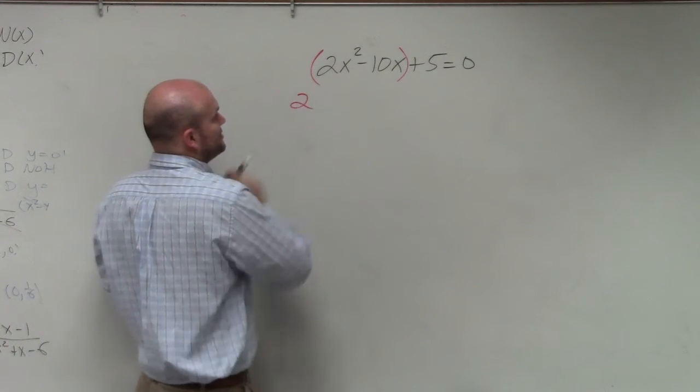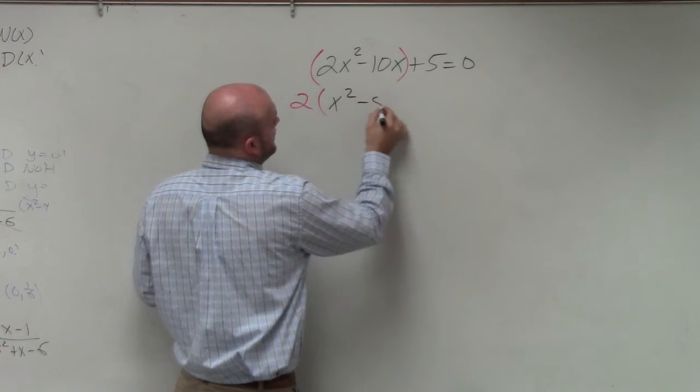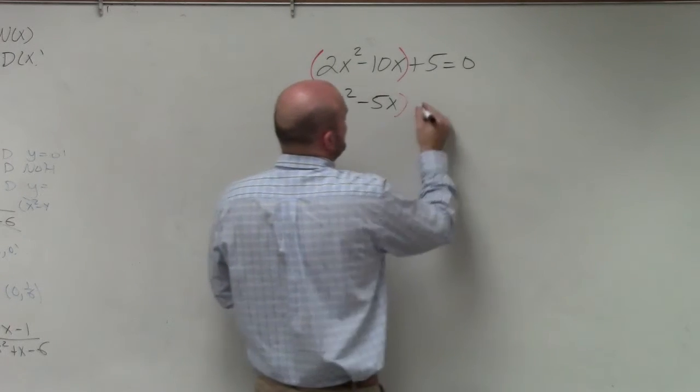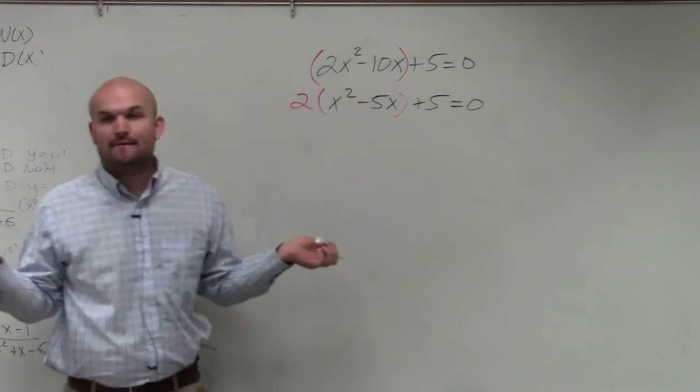So in this case, I'm going to factor out a 2. By factoring out a 2, I'm left with x squared minus 5x plus 5 equals 0. Is everybody finding out that? Yes?